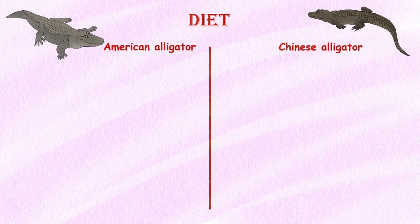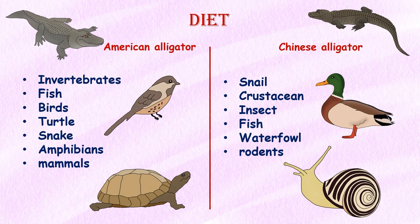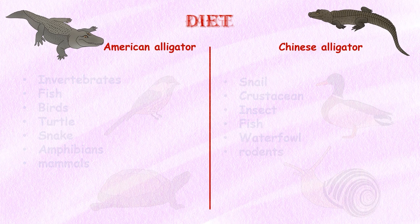Diet. Most American alligators eat a wide variety of animals, including invertebrates, fish, birds, turtles, snakes, amphibians, and mammals. The Chinese alligator is an opportunistic feeder. Its diet mostly includes snails, crustaceans, insects, and fish, but young waterfowl and rodents will be taken if available.